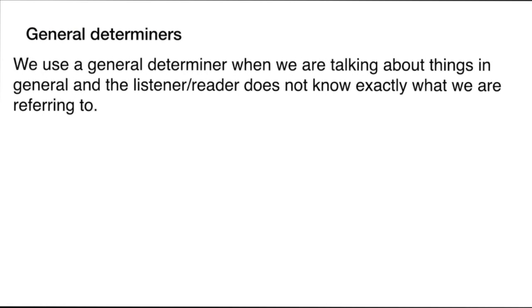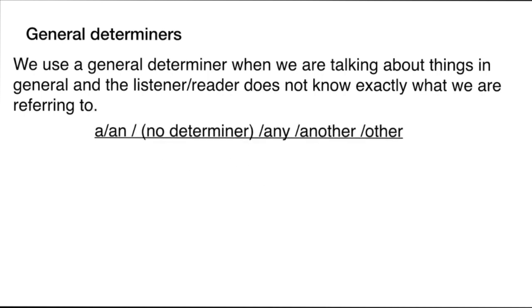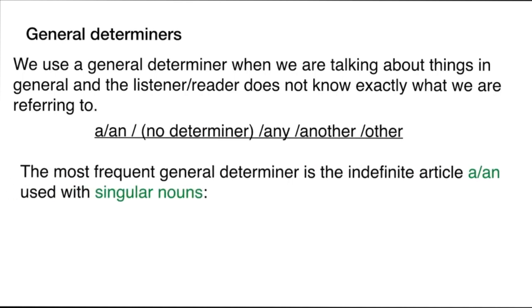The second type is general determiners. We use general determiners when talking about things in general, where the listener or reader does not know exactly what we are referring to. Examples include the indefinite article 'a' or 'an', 'any', 'other', and 'another'. The most frequent general determiner is the indefinite article 'a' or 'an', used with singular nouns.